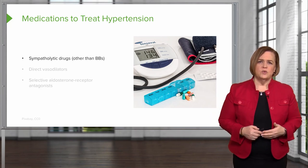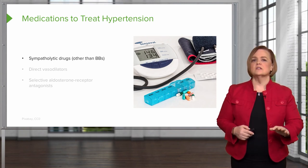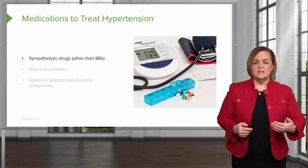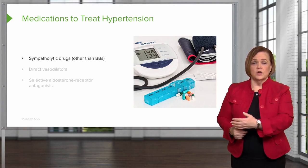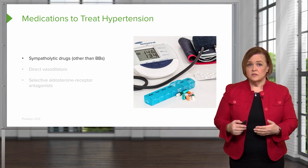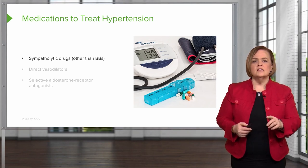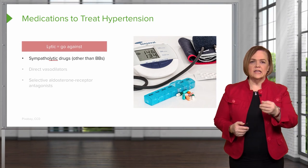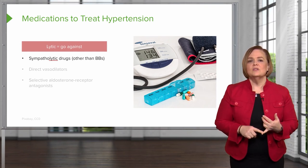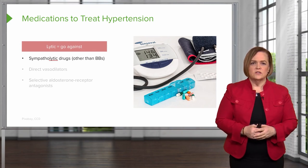Some other medications used to treat hypertension are sympatholytic drugs — we're talking about drugs other than beta blockers. In other videos, we've discussed sympathomimetic drugs, which are things that imitate the sympathetic nervous system being stimulated. This is the opposite. Underline the letters L-Y-T-I-C — lytic means to go against. So sympatholytic drugs will do the opposite of what the sympathetic nervous system does.